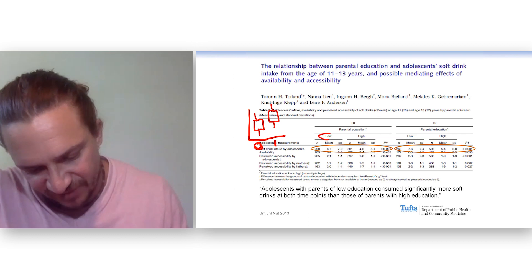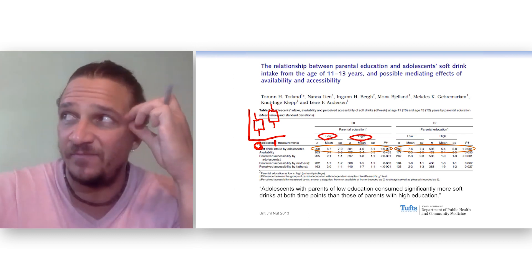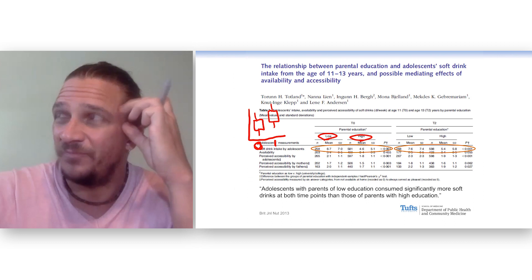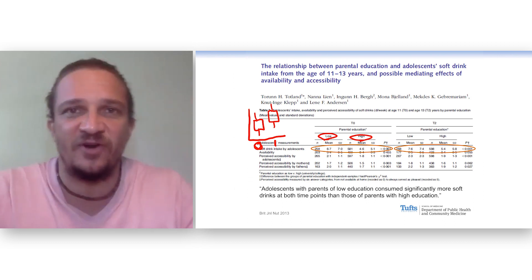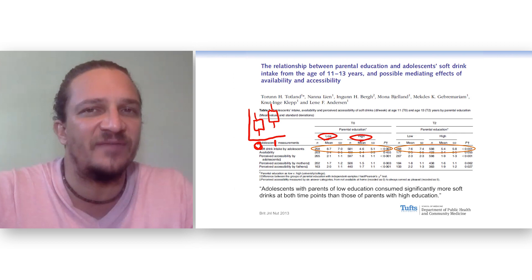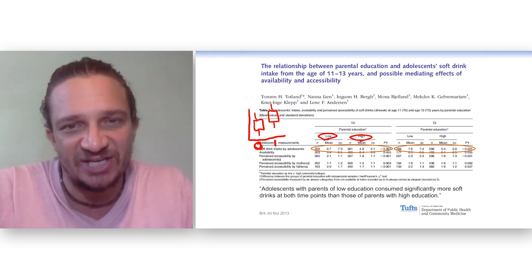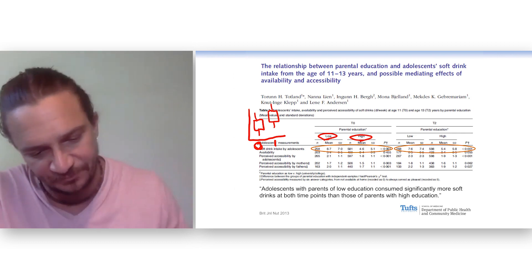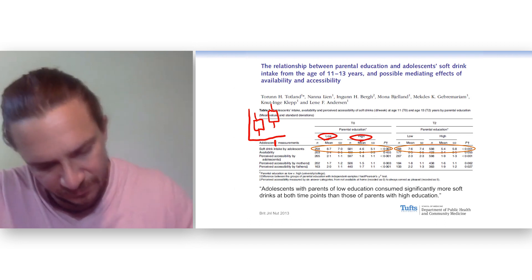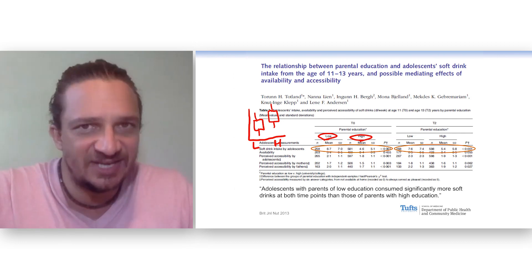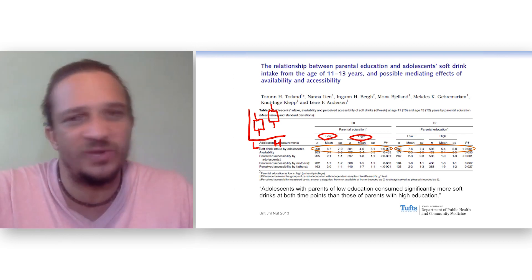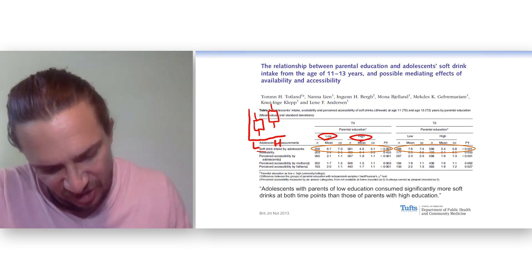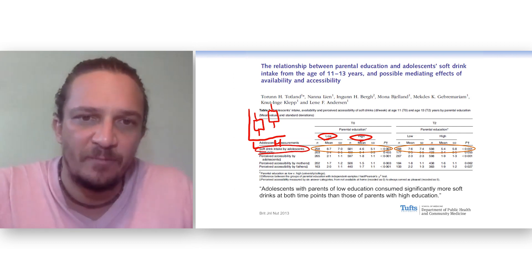So parental education, what type of variable is that? Well, education could be a continuous variable in a way. How many minutes of your life have you spent in school? That's depressing. Don't do the math on that. In this study, education is conceptualized as binary: low or high. So we have our two groups. This would be low, and this would be high. Then we need a continuous outcome variable for which we can calculate the mean. And here it is: soft drink intake by adolescents.